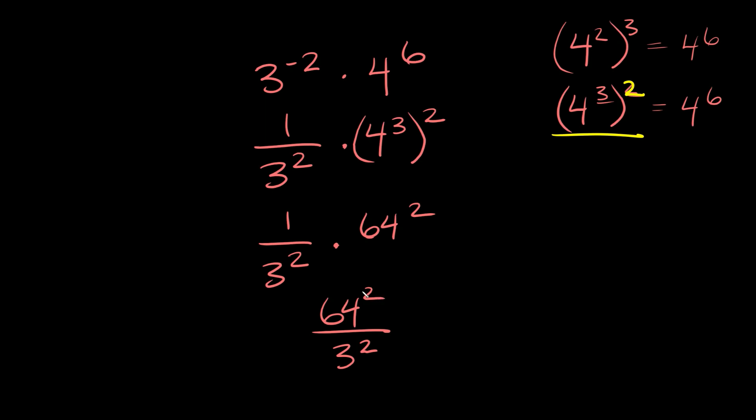So as you can see, we have the same exponent - we have a 2 there and a 2 there. So one way we can combine these now is we can combine 64 over 3 into a fraction and then just raise this whole thing to the second power, since they both have this squared exponent right there. So this is going to be the same thing as 64 over 3 and then just raising this whole thing to the second power.